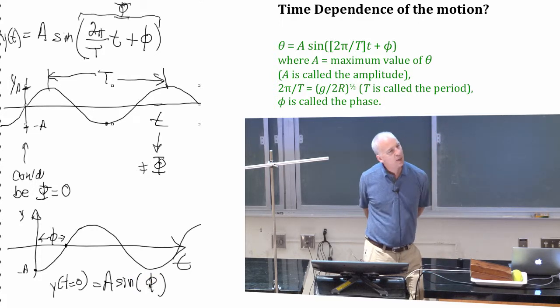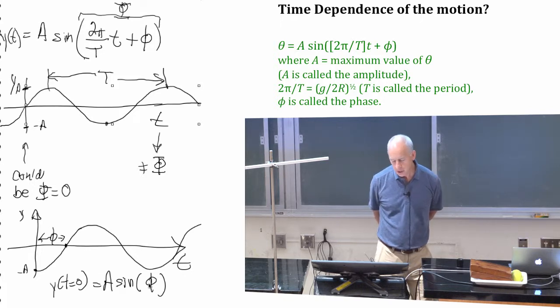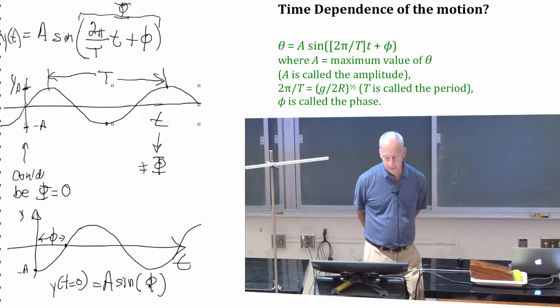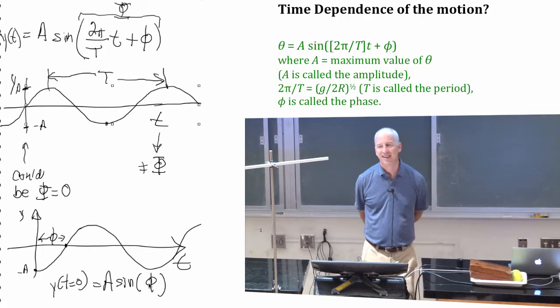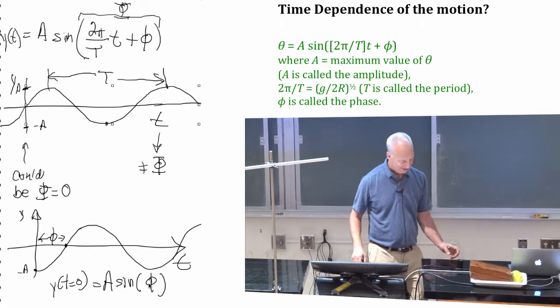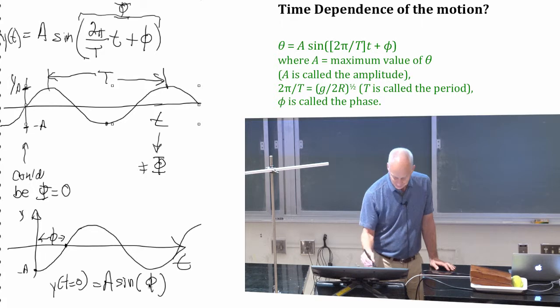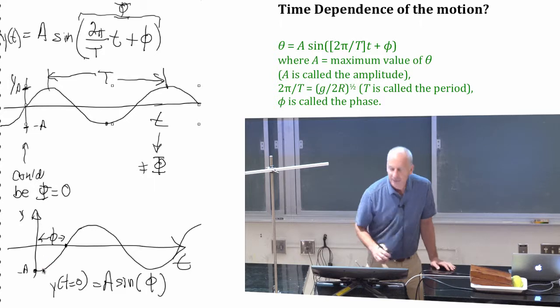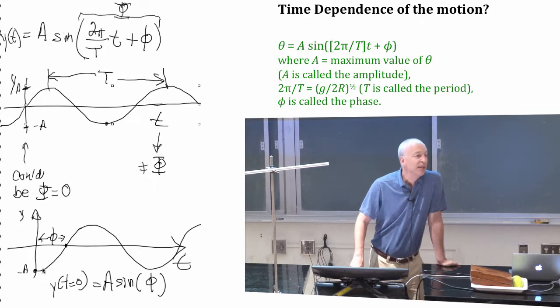What does phi have to be? I need y to be negative a. I've shifted it by an amount pi over two. So, is it negative or positive pi over two phi? This phi right here, in order to get this negative a, that has to be negative pi over two. Phi is negative pi over two.